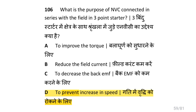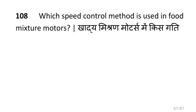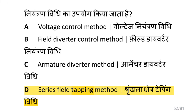What is the purpose of the no-volt coil (NVC) connected in series with the field in a 3 point starter? That is to prevent increase in speed. Which type of DC motor is used for sudden application of heavy loads? That is cumulative compound motor. Which speed control method is used in food mixer motors? That is the series field tapping method.